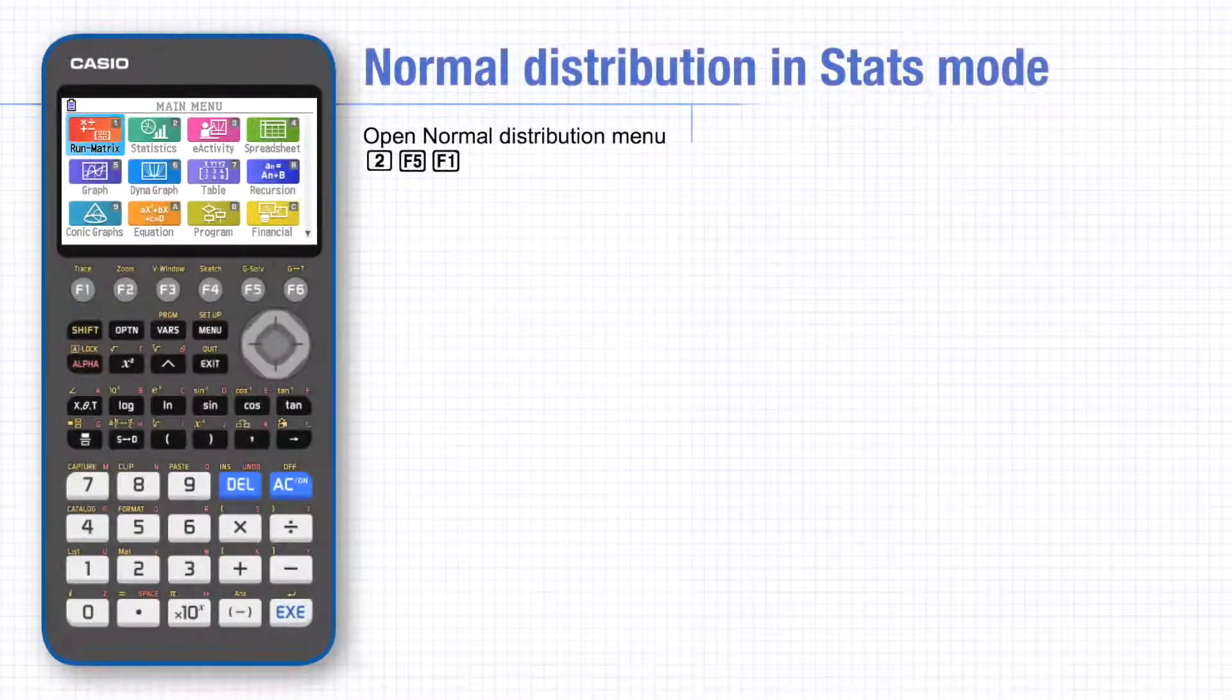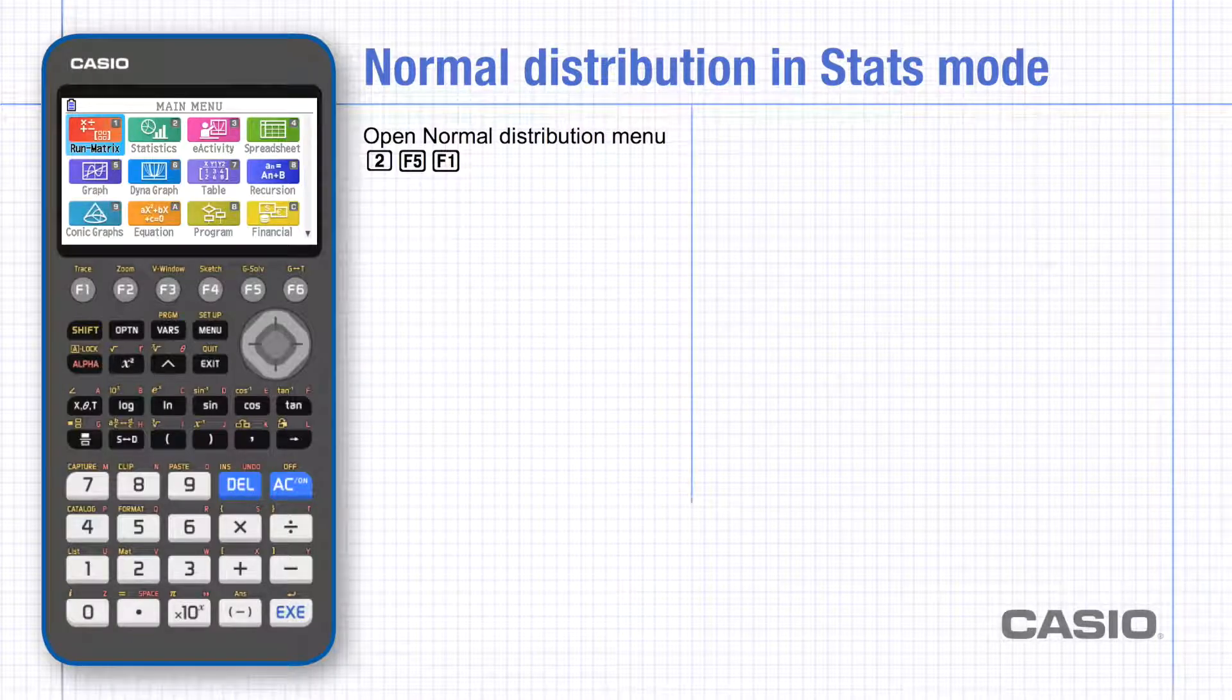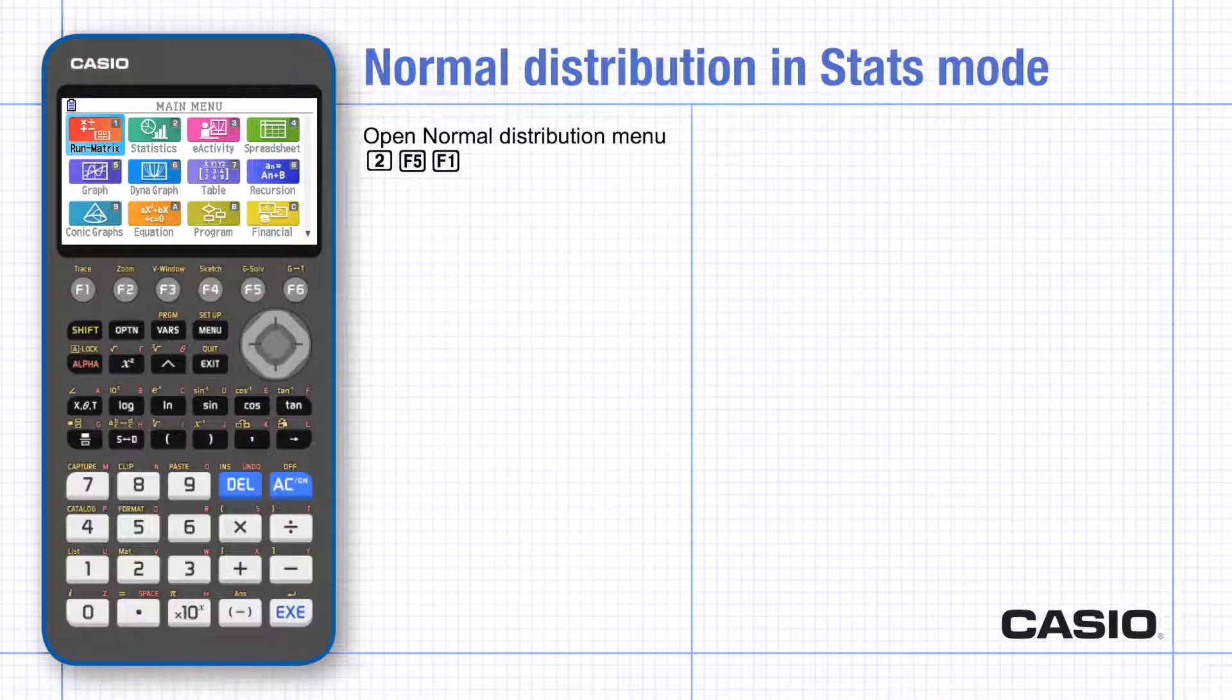In this tutorial we'll be looking at how to use the CG50 to calculate probabilities from boundaries and boundaries from probabilities for a general normal distribution.